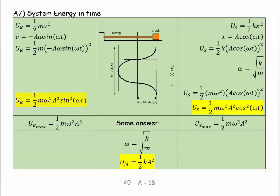Interestingly, both expressions share one-half, m, ω², and A², but one has sin²(ωt) and the other cos²(ωt). Since cos²θ + sin²θ = 1, when you add the kinetic and spring potential energies together they always sum to the same constant — that's your total mechanical energy.